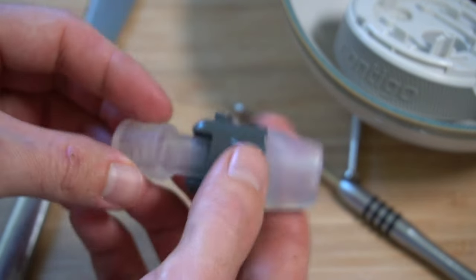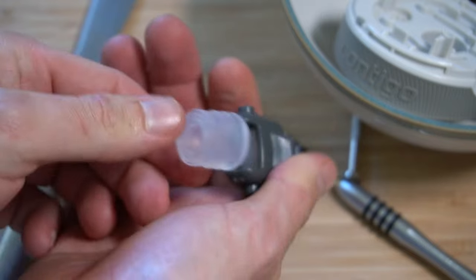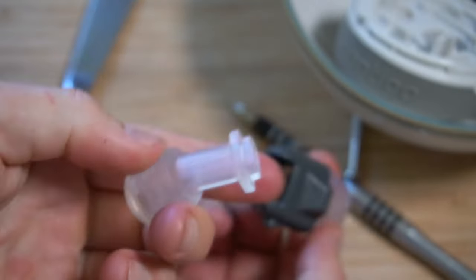Lastly is pulling apart the nipple or drinking spout. This I found to be the hardest part of the whole process. This bottom part just pulls out like so.